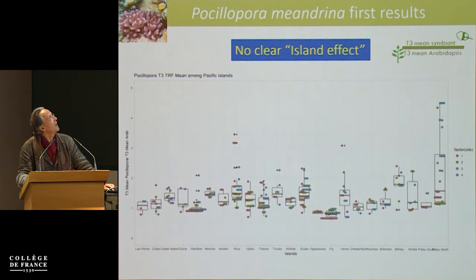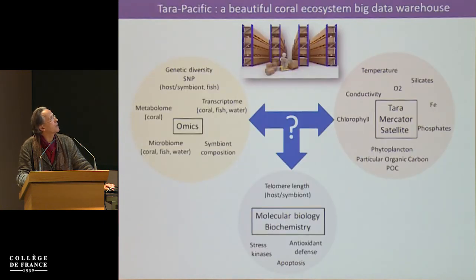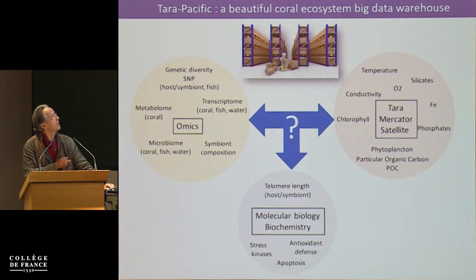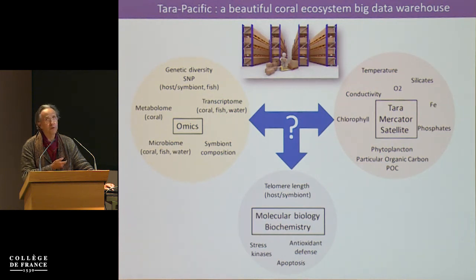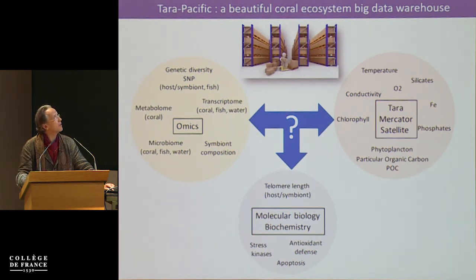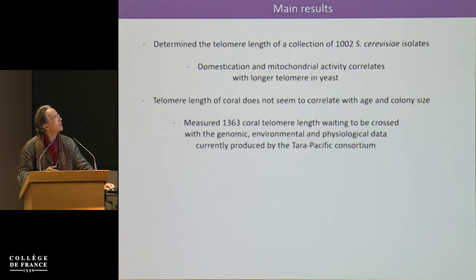It's not the same for the alga — I pass rapidly. We are building a beautiful coral ecosystem big-data warehouse, and we are now at the point where we have measured telomere length and are waiting for many genomic data from the consortium to confirm taxonomy before writing conclusions, along with all the contextual data to cross. I think next year we will have the taxonomic data for all samples and be able to cross them in a robust manner.